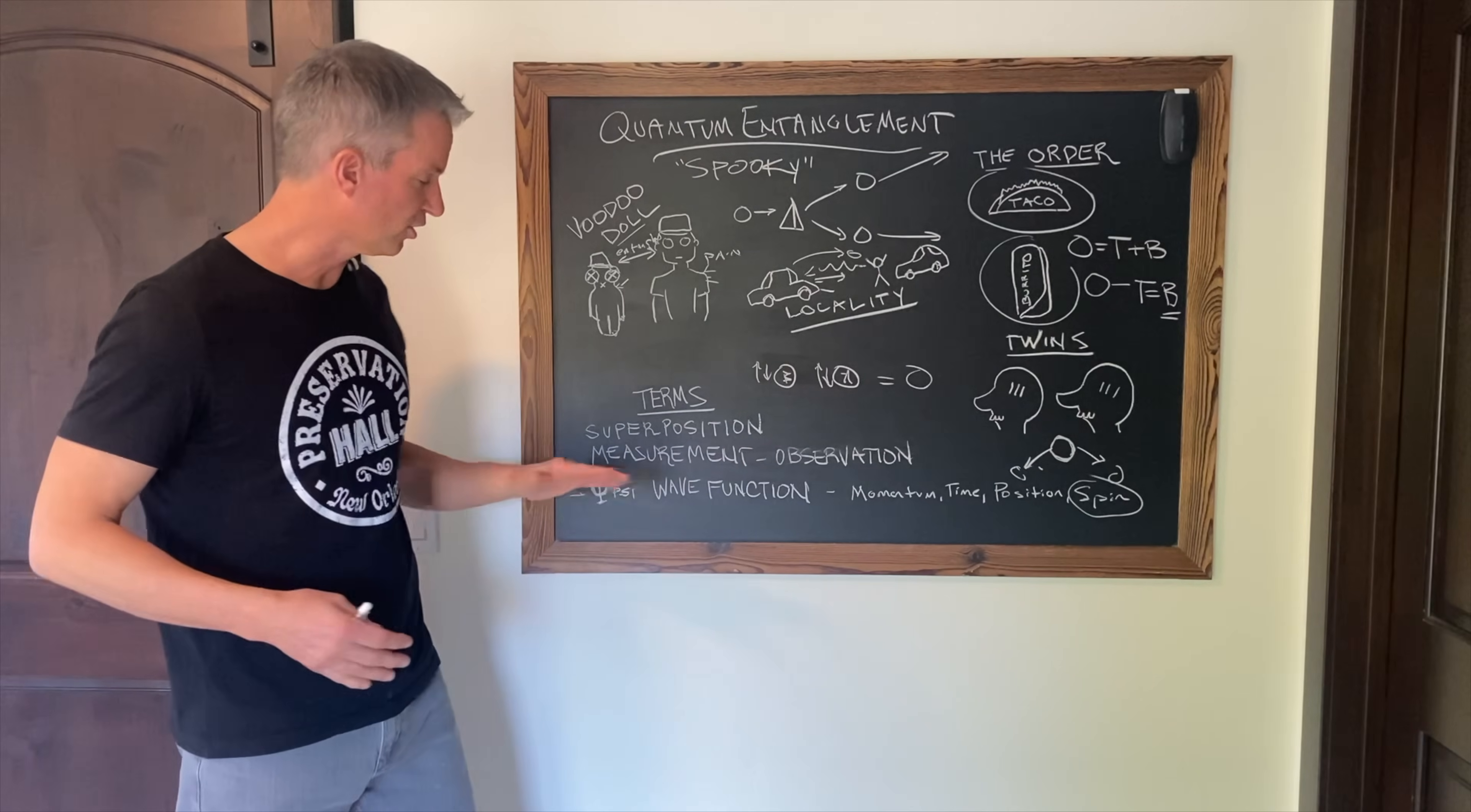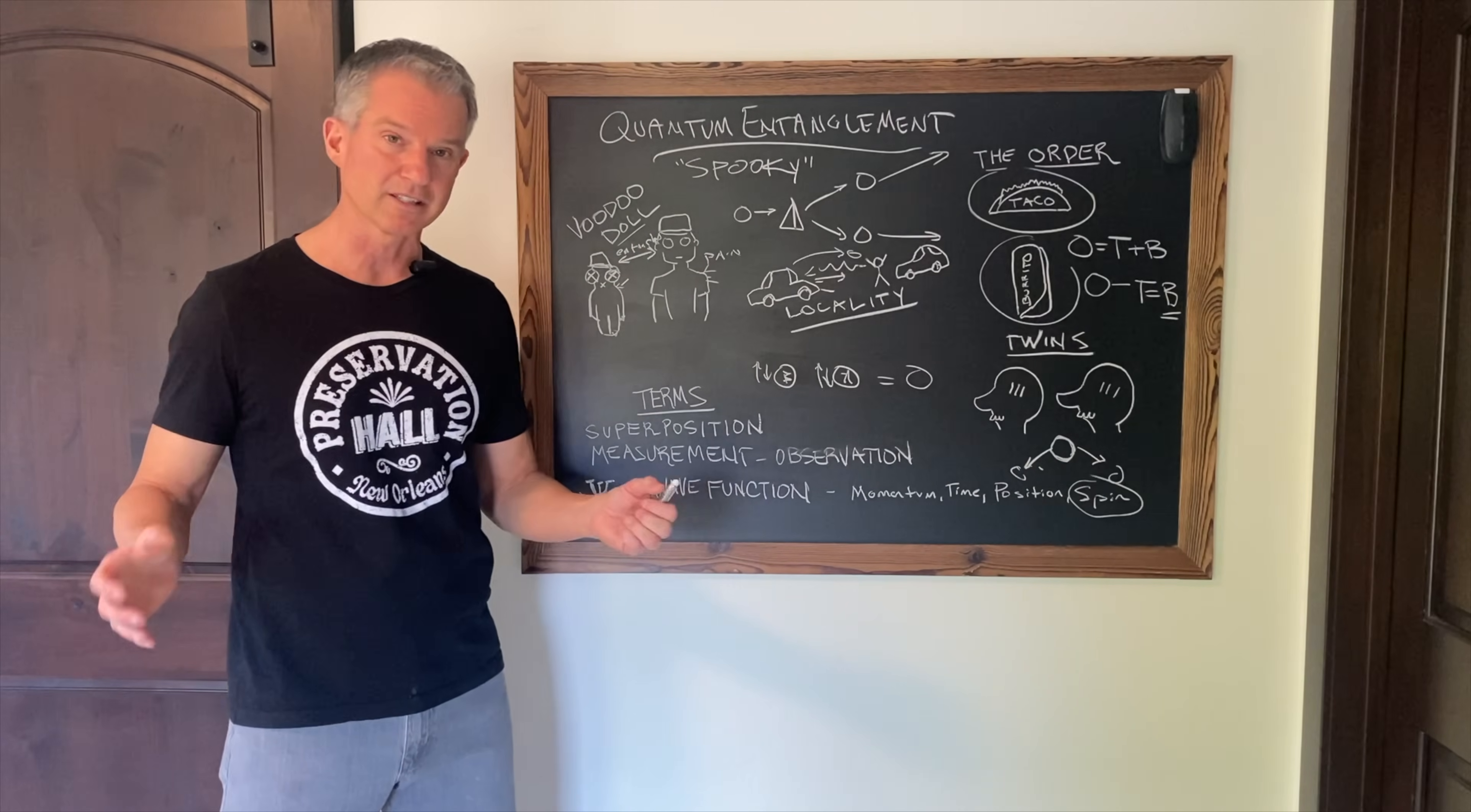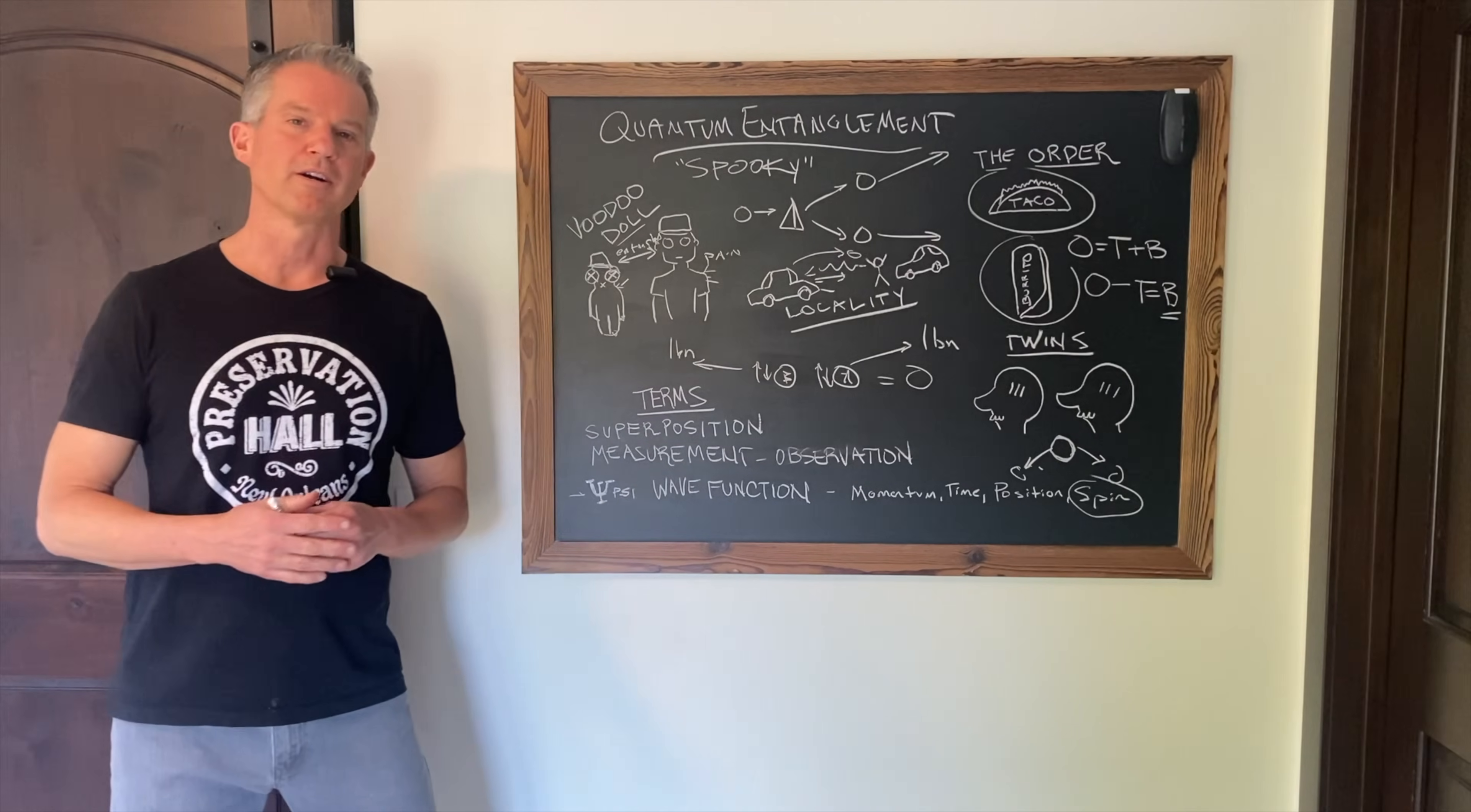And when particles are entangled and share the wave function, you could talk about their momentum, time, their position, or their spin. And they are interdependent because they're all part of the same formula. That doesn't matter if they are a billion, two billion light years apart.